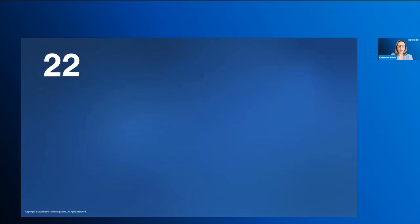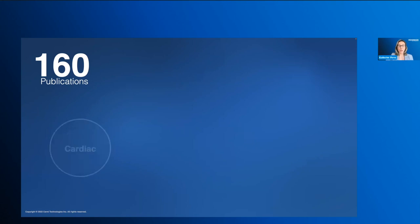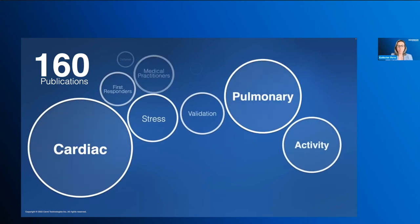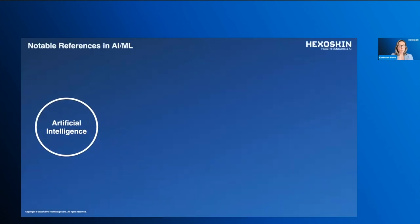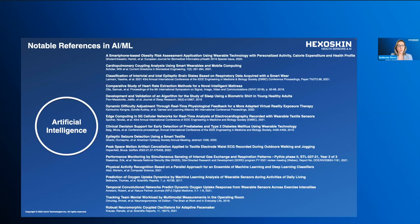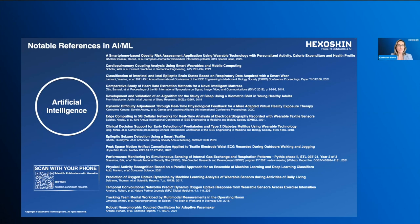Over the years, our research community has been busy with our connected platforms, and we have over 22 validation studies against the gold standard, along with about 160 publications and growing across various types of themes. For more information about our publications, please reach out to our team or visit our website. I've included a quick list of notable references within the AI and ML space that's been growing recently — you can access the full list on our website or reach out to our team.